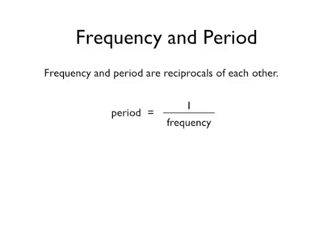Frequency and period are related. In fact, they are reciprocals of each other. In other words, if you know the frequency of something, you can get the period by just taking 1 divided by the frequency. Likewise, if you know the period, you can get the frequency from 1 divided by the period.